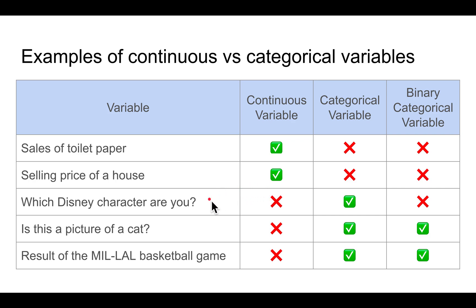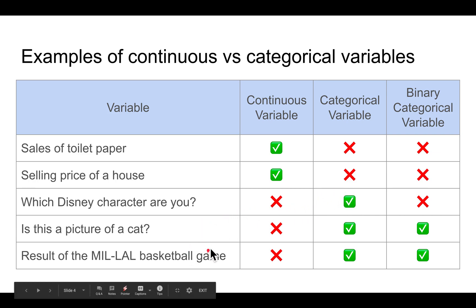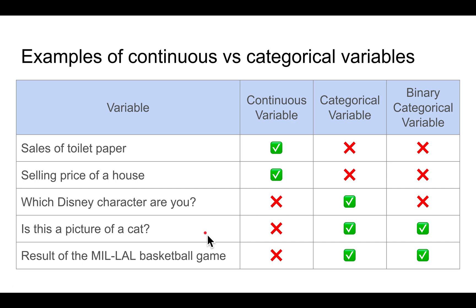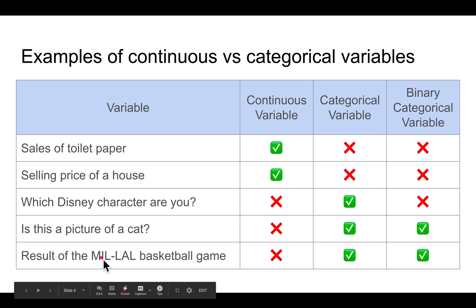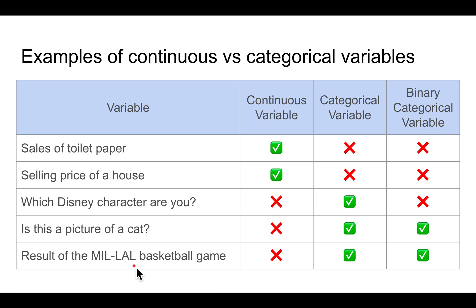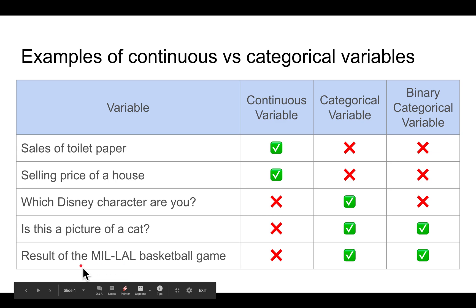On the other hand, if you look at which Disney character someone is, there are basically a finite number of Disney characters — maybe 500 or 1000 — so that's a categorical variable. And for these last two examples: whether a picture is a picture of a cat is basically yes or no. Or when the Milwaukee Bucks play against the LA Lakers in the NBA Finals, either the Bucks will win or the Lakers will win — so the result is a win or lose, a binary result.